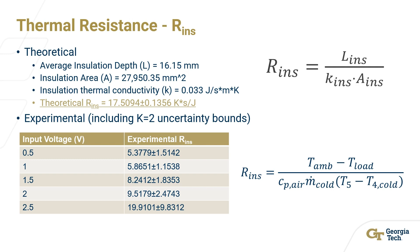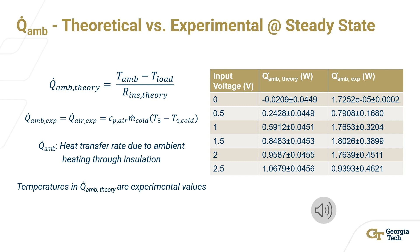The next step was to compare the theoretical and experimental values of Q ambient at steady state. On the left-hand side, you will see two variables and their equations to achieve those values — one theoretical and the other experimental. On the right-hand side are the calculated values. Theoretically, Q ambient seems to increase quite consistently as input voltage increases. However, through experimentation, Q ambient stayed fairly consistent and higher than its theoretical counterpart throughout, with a couple of outliers at 0.5 volts and 2.5 volts.